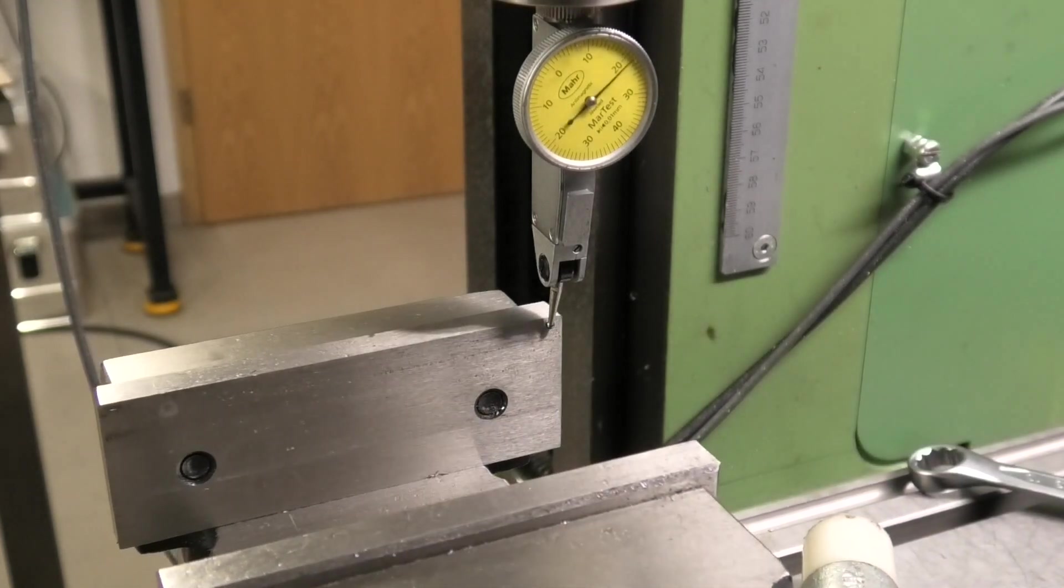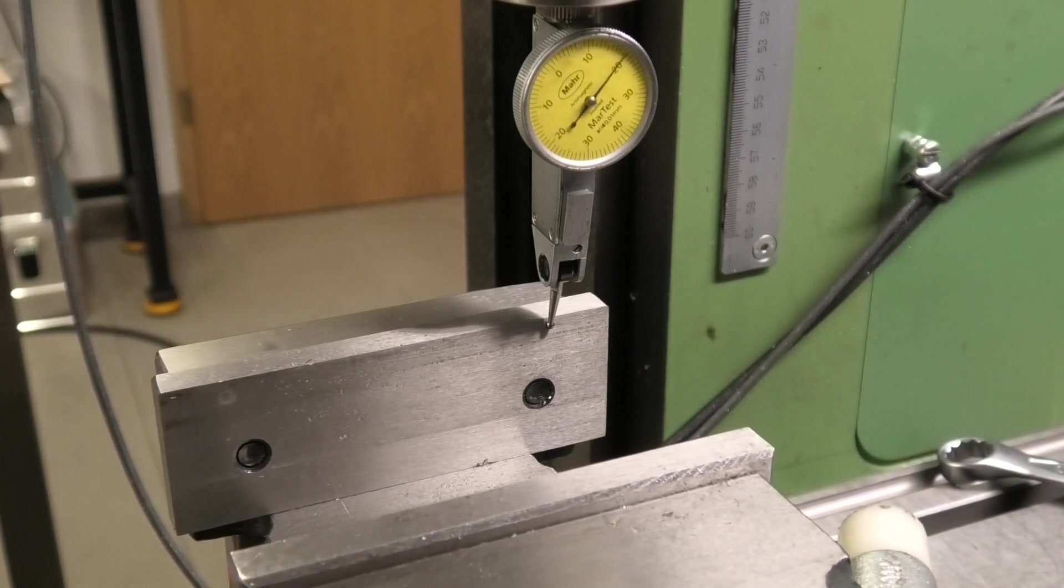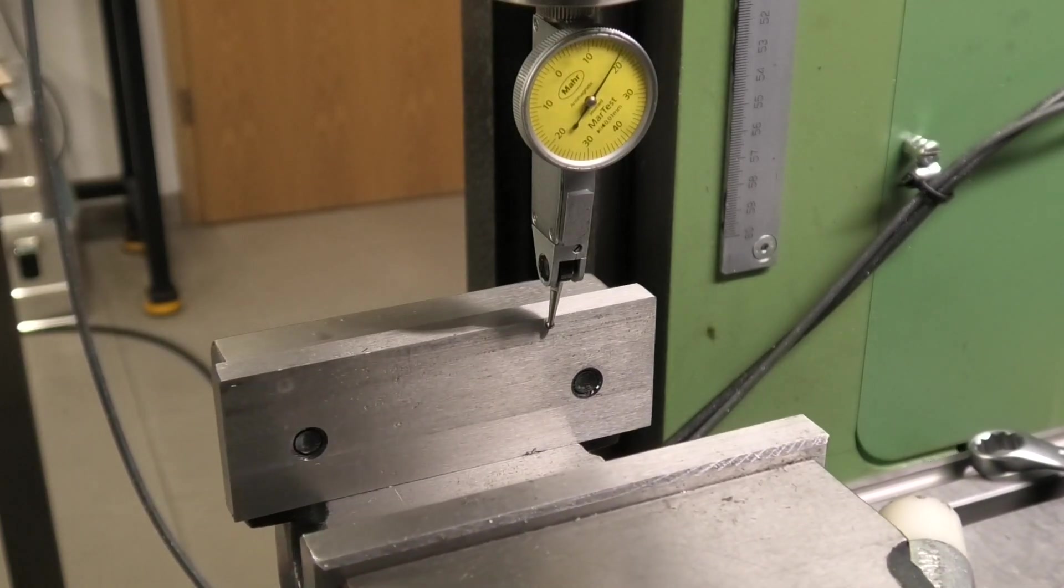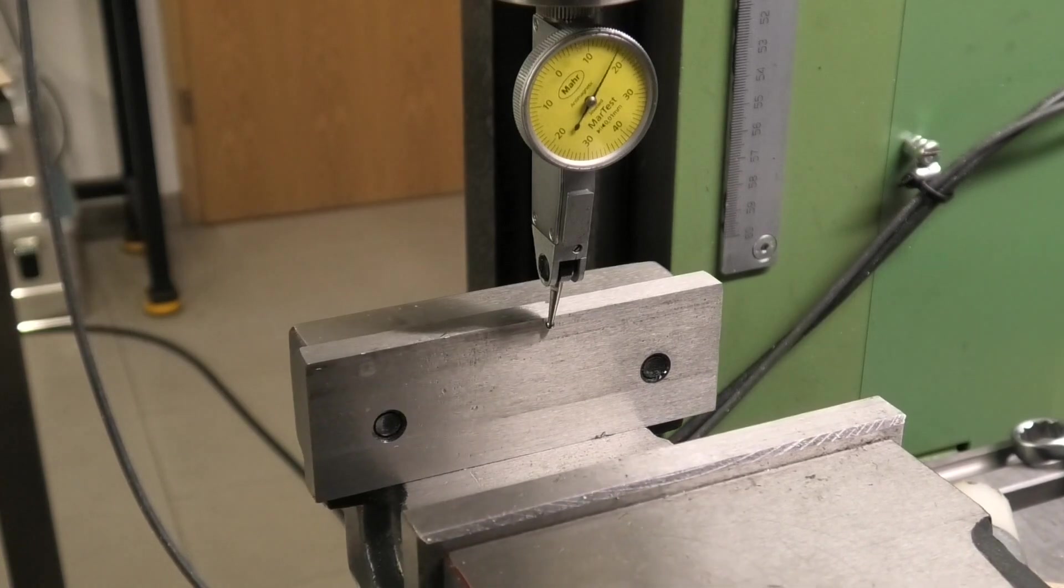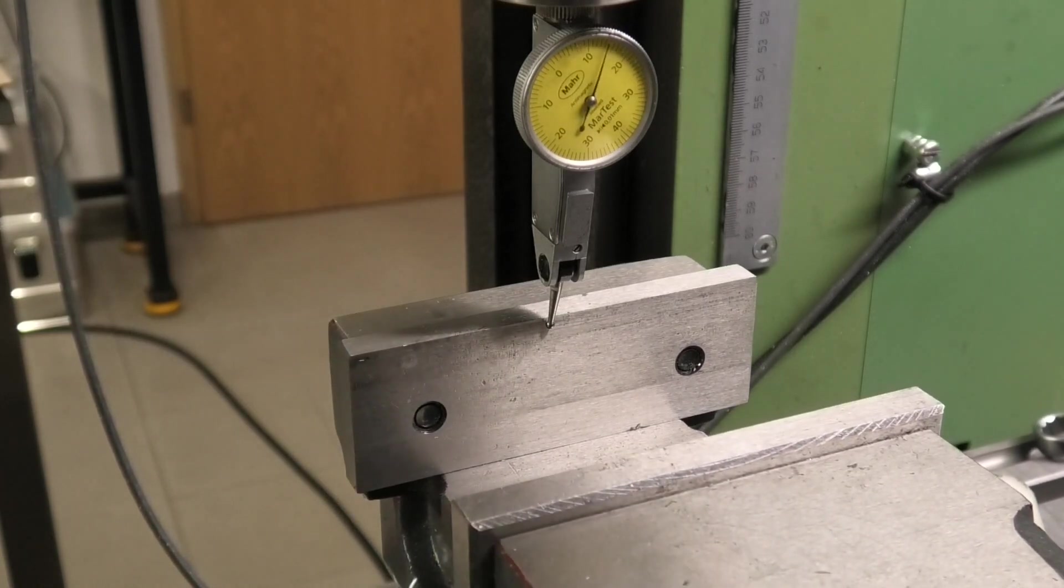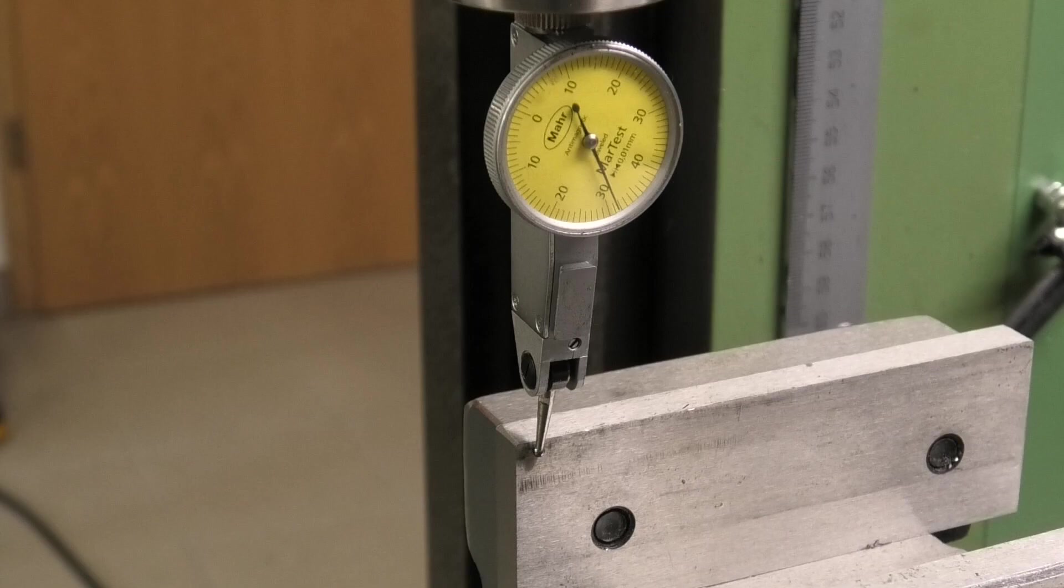If the machine vise is not parallel to the x-axis, loosen the fastening screws a little and tap it in the right direction with light plastic hammer blows. It will take some practice, but you will soon have the hang of it.